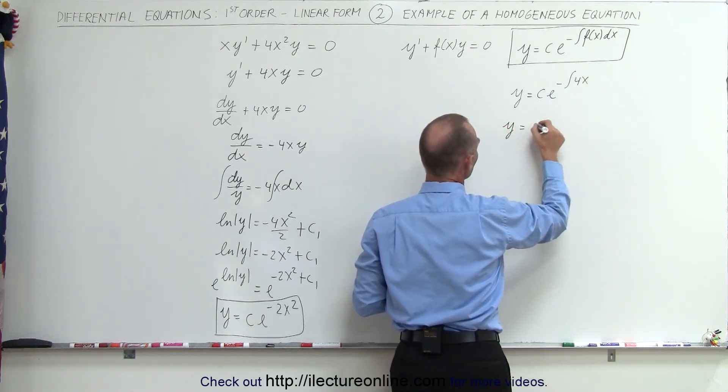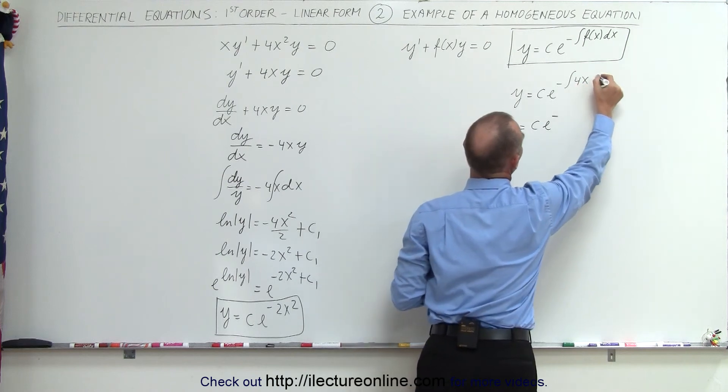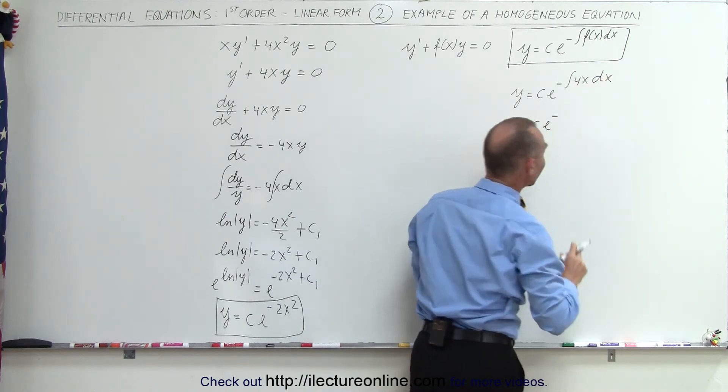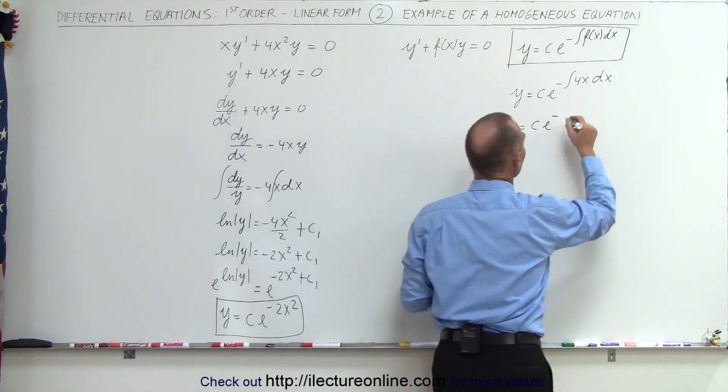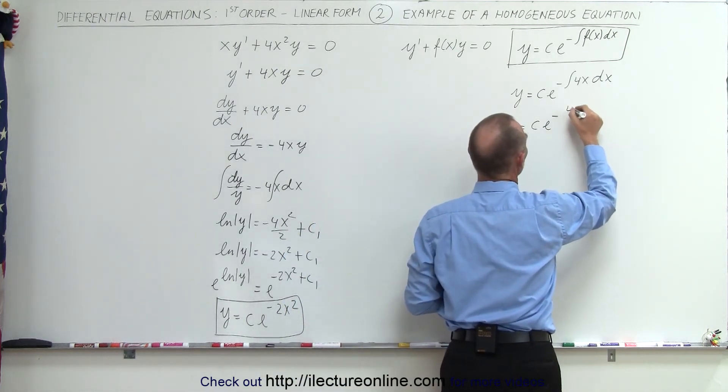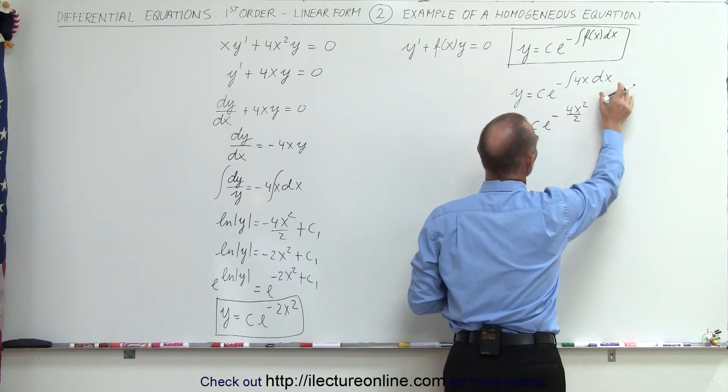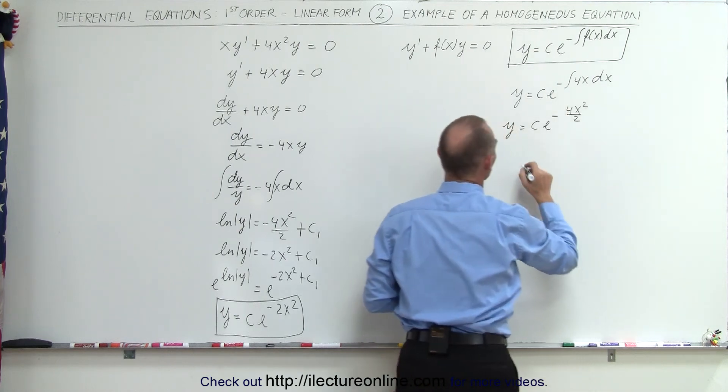I can say that y equals c e to the negative of, of course I can't forget my dx otherwise I can't integrate it, so I do have to have a dx here. Then I can integrate 4x, so this equals 4x squared divided by 2. My constant of integration is already over here.